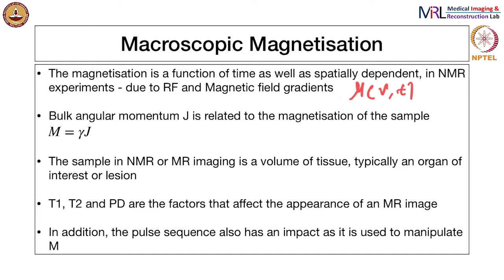We will also define one other quantity for the sake of analysis. There is a bulk angular momentum J that we can define. For every individual nucleus we said there is a spin angular momentum, and similarly for the sample itself there is a bulk angular momentum J. It is related to the magnetization of the sample through the expression M = gamma * J, where gamma is again the gyromagnetic ratio.